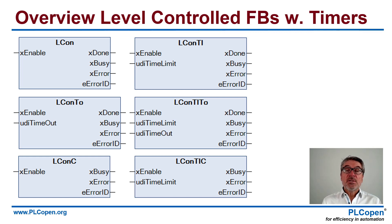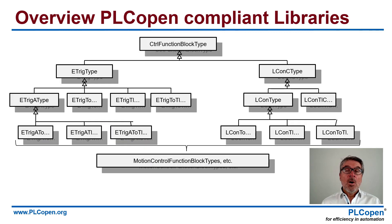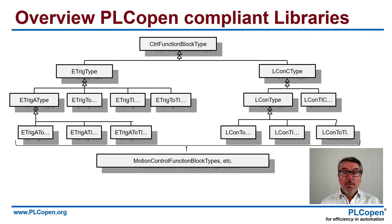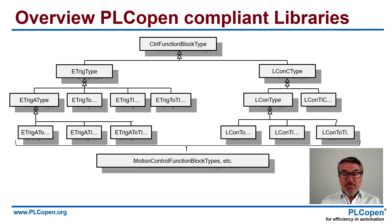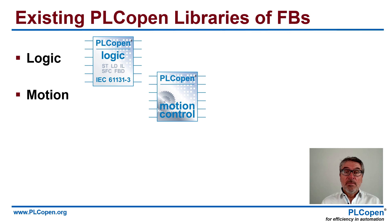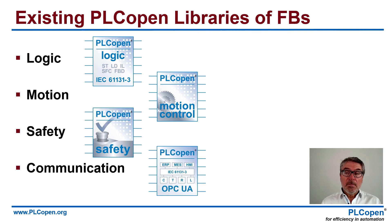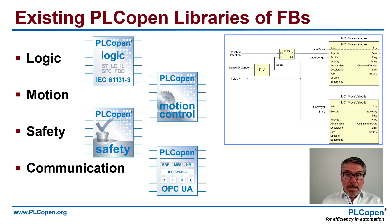Overall, if you structure these and think about an object-oriented approach — think about inheritance — you see a structure like this for the different function blocks as defined. At the bottom you have the implementations in function block libraries like motion control, safety, and communication. We have libraries for logic, motion, safety, and communications. All of these libraries help you to simplify the development of your application software.